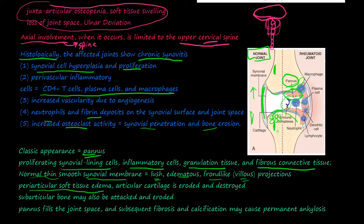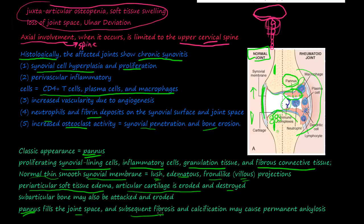You have periarticular soft tissue edema due to the inflammation response, and articular cartilage is eroded and destroyed. Subarticular bone is also attacked and destroyed. Eventually, in severe chronic cases, the pannus fills the joint space and then undergoes fibrosis and calcification, which can cause permanent ankylosis — fusion of the two joint surfaces together, with no more movement.